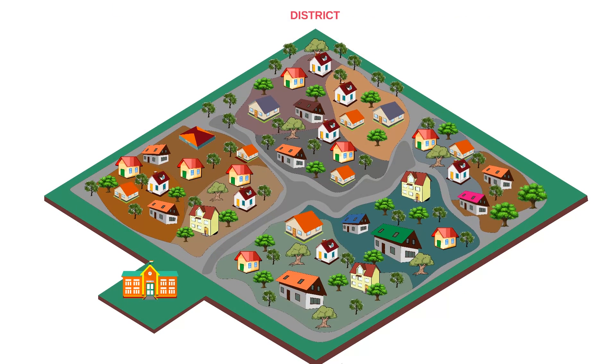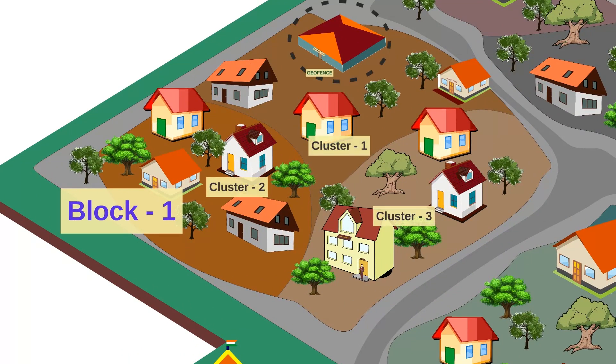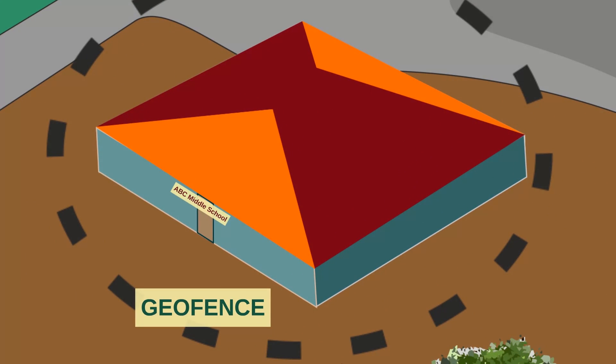You can see the top view of a district with four blocks. There are multiple clusters of schools in block one. This is ABC Middle School. The circle around it shows the geo-fence to restrict attendance marking from outside the school location.